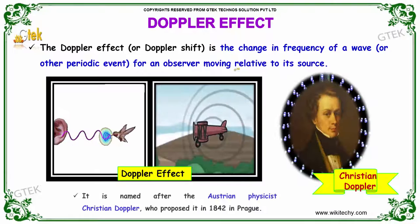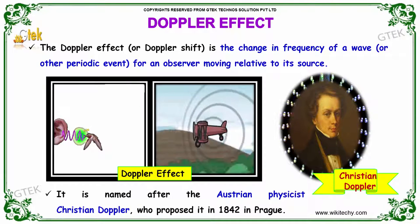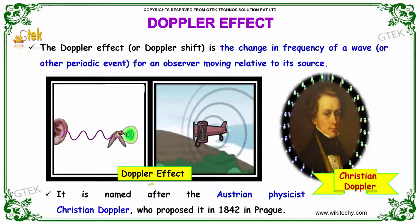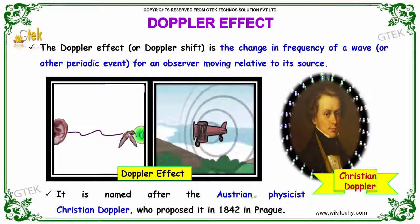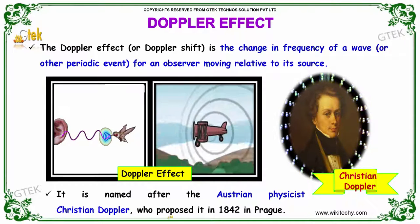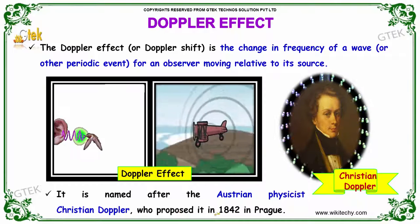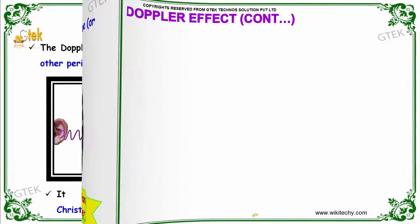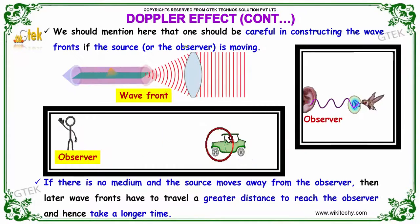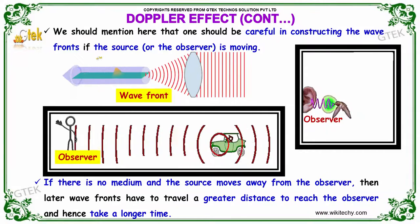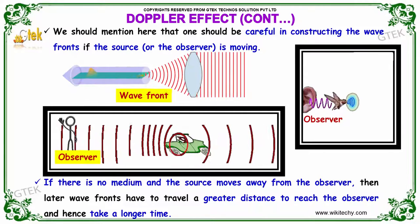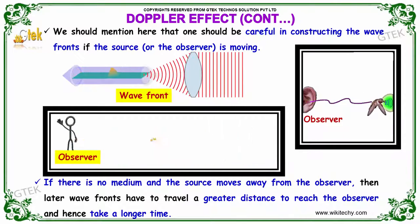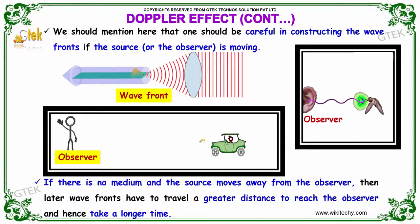The Doppler effect is the change in frequency of a wave or other periodic event for an absorber moving relative to its source. It is named after the Austrian physicist Christian Doppler, who proposed it in 1842 in Prague. If the source is moving, the intensity of the frequency is more. If it is far away, the frequency is less.